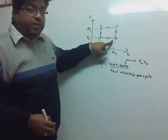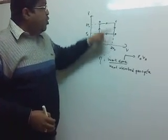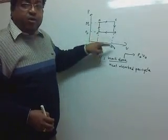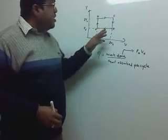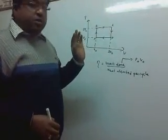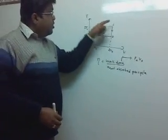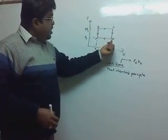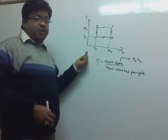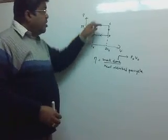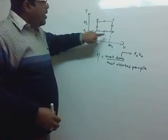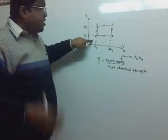Now from C to D, we see at constant volume, pressure is decreasing. At constant volume, pressure is decreasing. So the temperature is constant—sorry, the temperature is decreasing. And from D to A, again at constant pressure, volume is decreasing, so temperature is also decreasing. So from C to D and D to A, heat is rejected by the system.